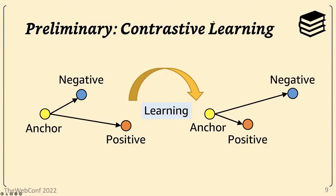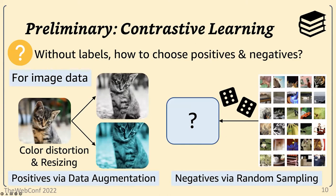I'll first briefly introduce contrastive learning. Here, this figure shows how contrastive learning optimizes the embeddings of entities. The main idea is to pull an entity, called an anchor, closer to its positive sample in the embedding space, where a positive sample is an entity that belongs to the same class as the anchor entity, while pushing the anchor away from its negative sample. When there are no labels, the choice of positive and negative samples plays a crucial role in contrastive learning.